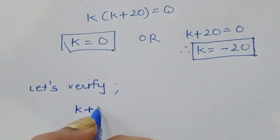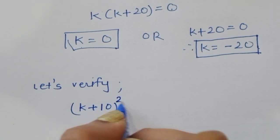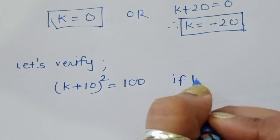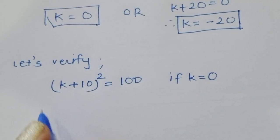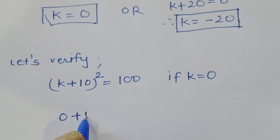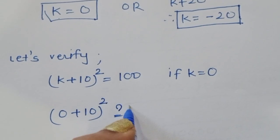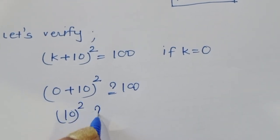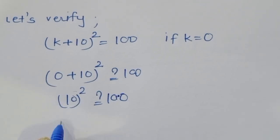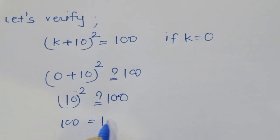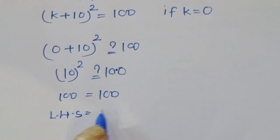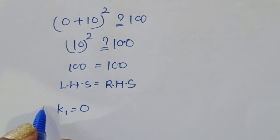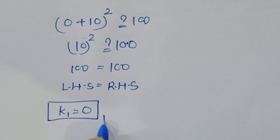Let's verify these values. Substituting k = 0 into (k + 10)² = 100: (0 + 10)² = 10² = 100. LHS equals RHS, so k₁ = 0 is a correct solution.